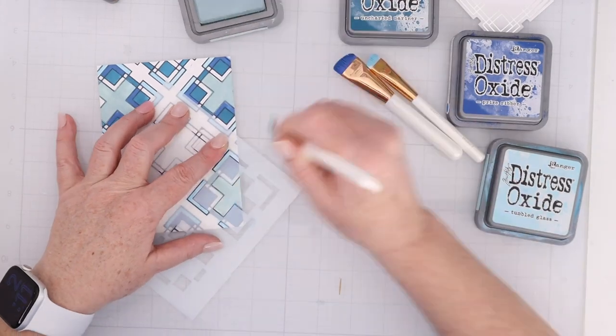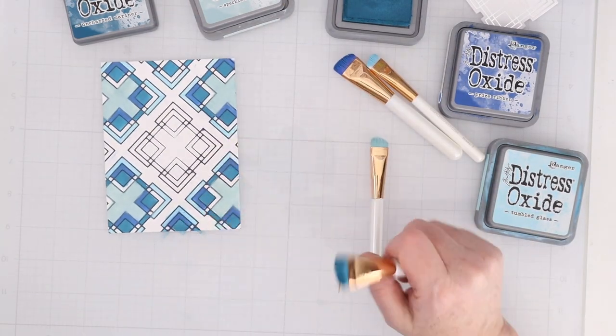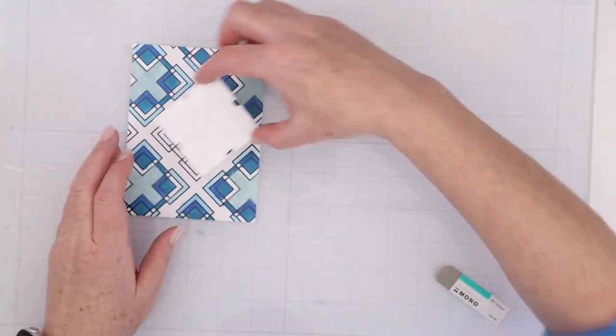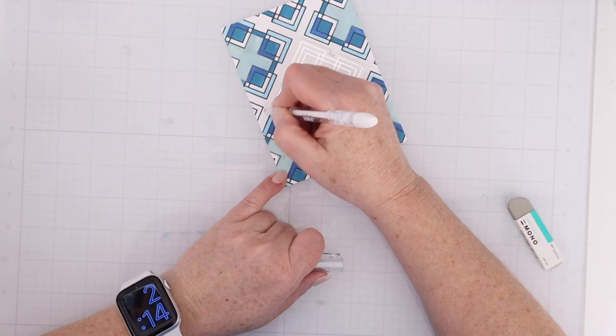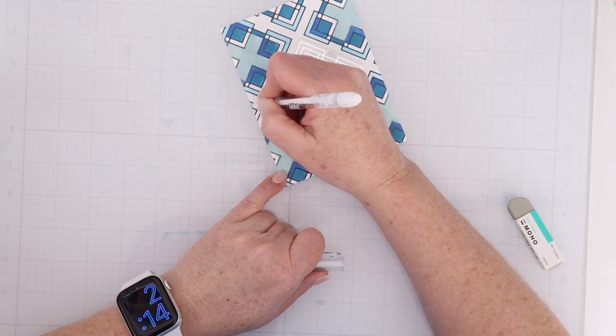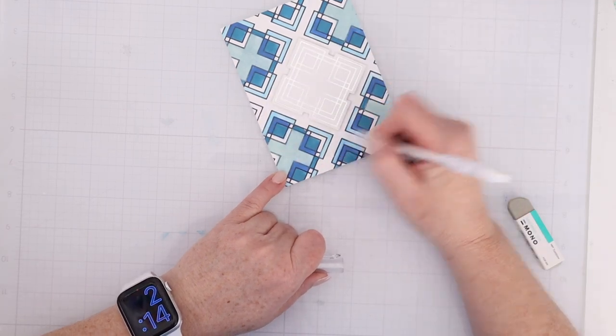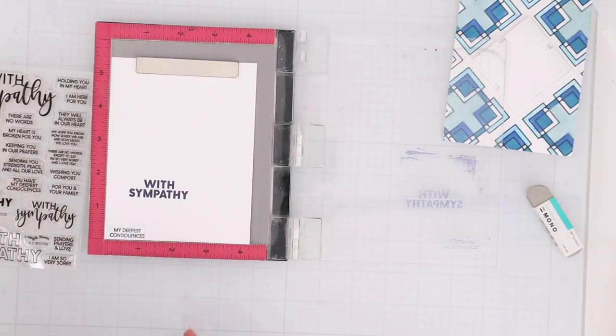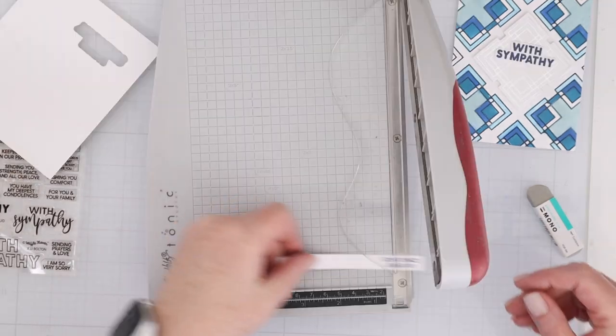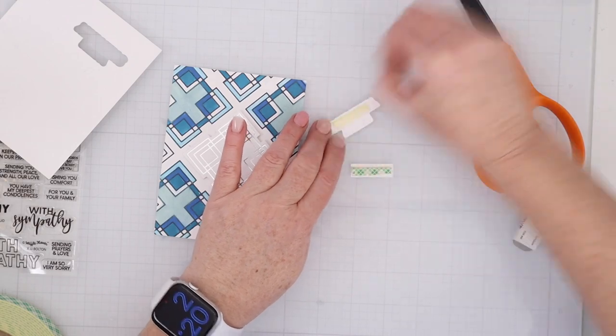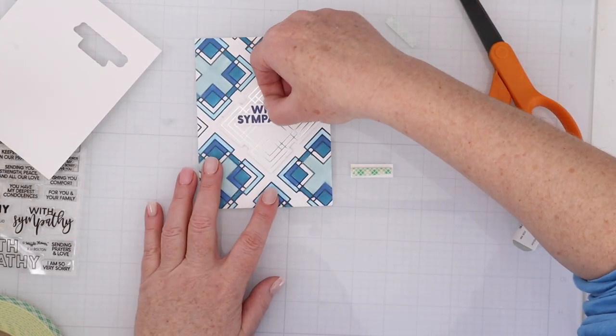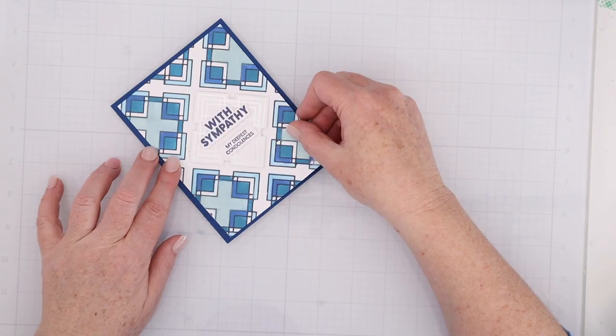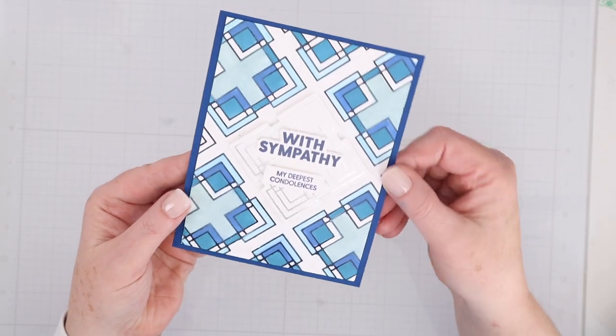So I'm using a whole bunch of different distress oxide colors. I have prize ribbon, tumbled glass, uncharted mariner, and speckled egg. And I've used all the different shader brushes from Waffle Flower to color those in. When I don't have a huge area to color, I like to use those shader brushes. Besides a sand eraser, you could use a white gel pen if you just have very tiny areas that you need to fix. I am going to stamp the sentiment this time with chipped sapphire distress oxide ink. I love the way chipped sapphire looks for sentiments because it's different than black or brown or gray. It's a dark, dark blue, but it pops just as much as a black would. And then I am going to adhere this panel down onto some Cosmic Sky cardstock, and that will be a nice finishing touch mat around the edge.